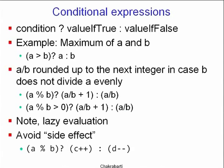Another feature C++ provides for short, simple coding is what is called a conditional expression. It has the form: a logical condition which is either true or false upon evaluation, then a question mark, then a value to return if the condition is true, then a colon, and then a value to return if the condition was false.